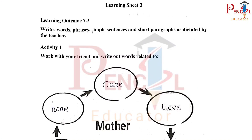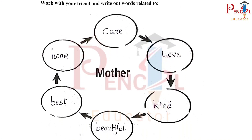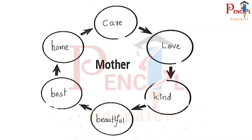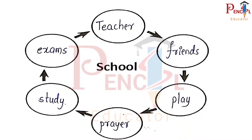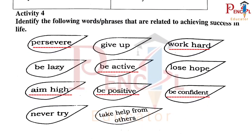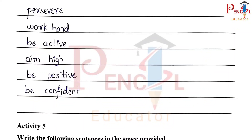Learning Sheet 3 — words related to mother, words related to school. Activity 4: Persevere, hard work, be active, aim high, be positive, be confident.